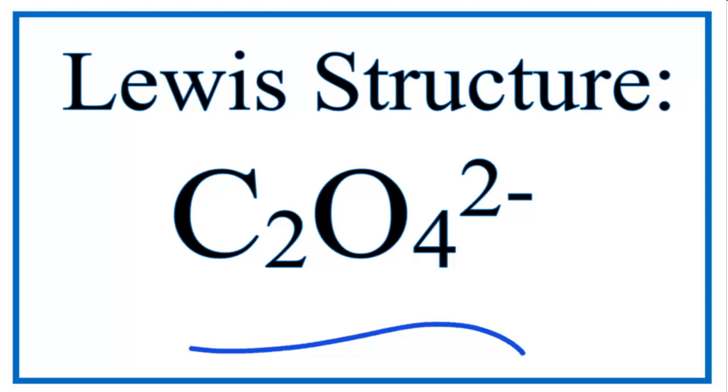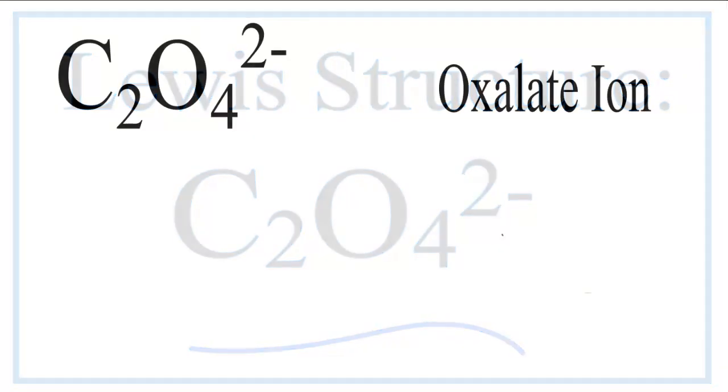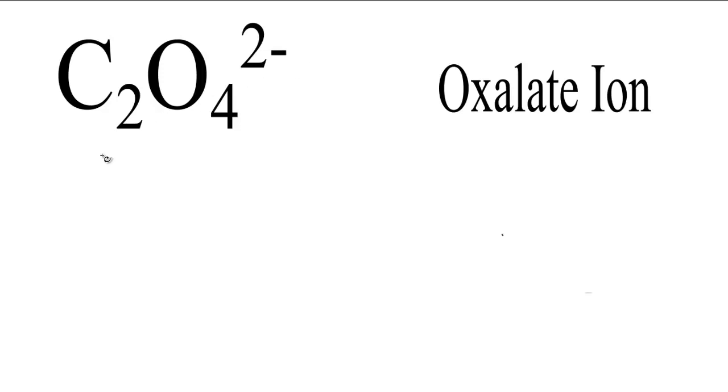For the C2O4 2- Lewis structure, the oxalate ion, let's count up the valence electrons first.